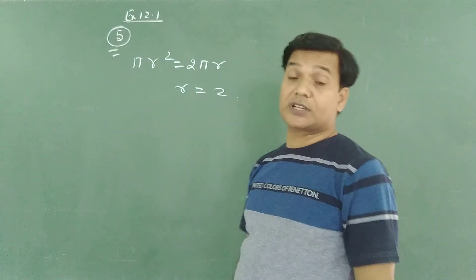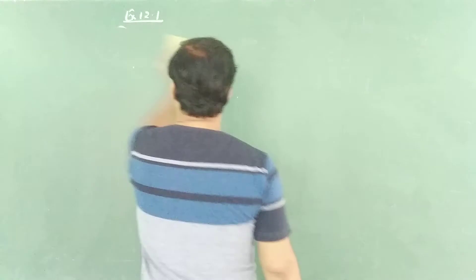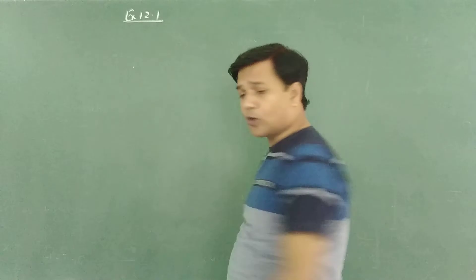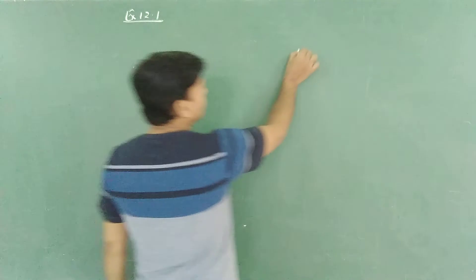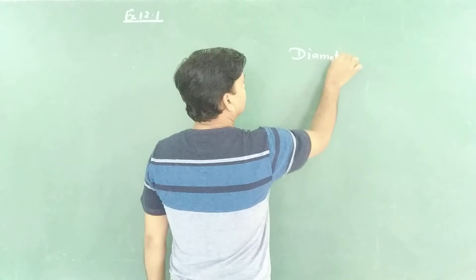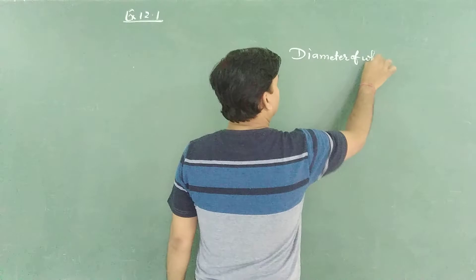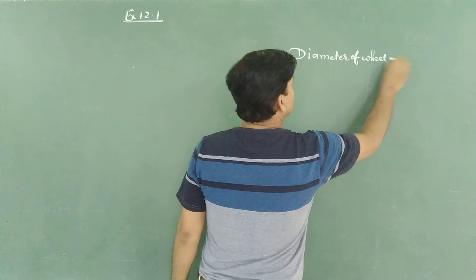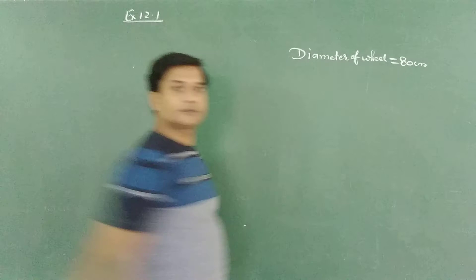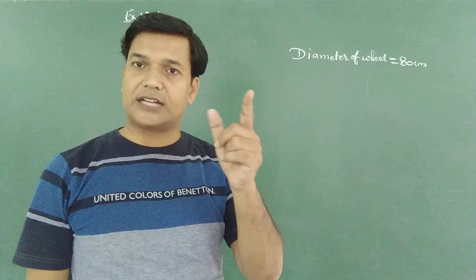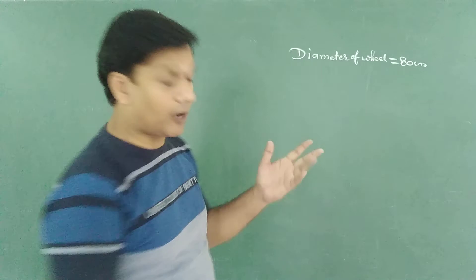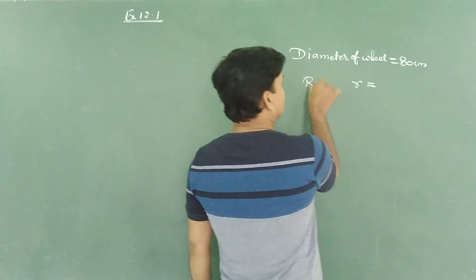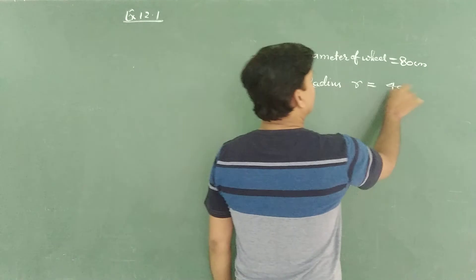Now we are focusing on the fourth problem. In this fourth problem, we have the wheel of a car with diameter 80 cm. The diameter of the wheel is 80 cm, and the radius is half of that, which means 40 cm. So radius r is 40 cm.